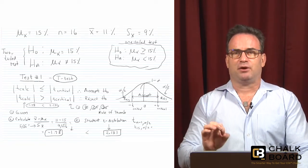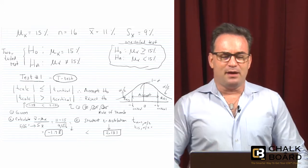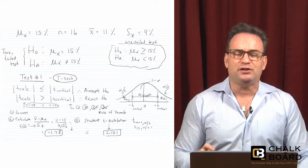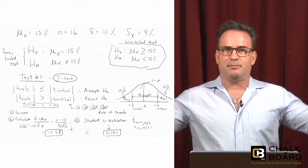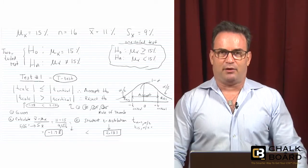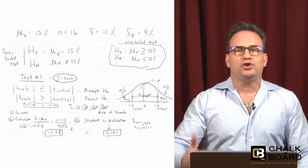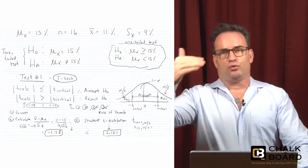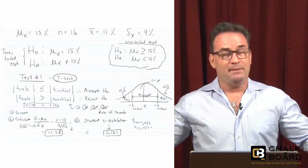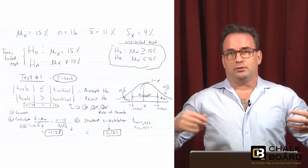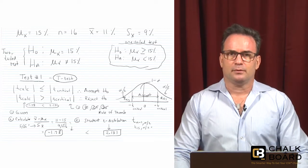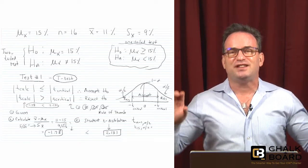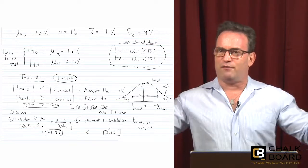We set up the null hypothesis H-sub-zero as: the population mean equals 15%. The alternate hypothesis is: the population mean is not equal to 15%. When we set it equal to or not equal to a specific value, this is a two-tailed test because the rejection area can be in two different areas — all the way to the right or all the way to the left of the acceptance area. We always want to reject the null hypothesis and accept the alternate hypothesis — 'AA, accept the alternate' — because we want to find a result that is statistically significantly different from what we expected, a result in the tails.